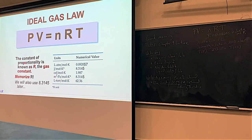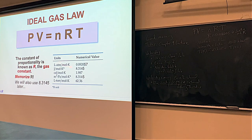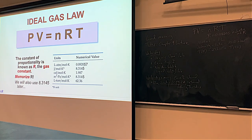You can have other kinds of R's, and in other classes you might use some of those. But for us right now, 0.082057 is the important one. So this R is actually something that's going to follow us for a while — it's just a constant that pops up in a lot of different places. 0.082057 is used a lot for gases.